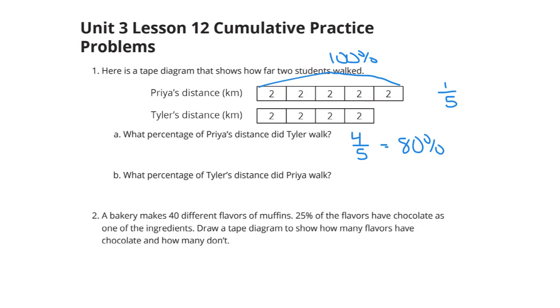Tyler walked four of those five, which is equal to 80%. Now, the next question says, what percentage of Tyler's distance did Priya walk? Well, Tyler's broken into fourths, and Priya had five-fourths of those, and so that is 125%.